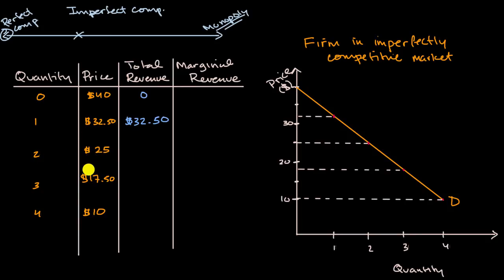When we sell two units, what's going to be our total revenue? Well, both of those units are going to be sold at $25. It's not like that first person's still willing to pay $32.50. It's like, hey, your market price is $25. That's what everyone's going to pay. So now your total revenue is $50, two times $25.